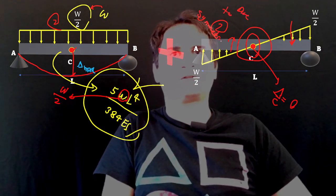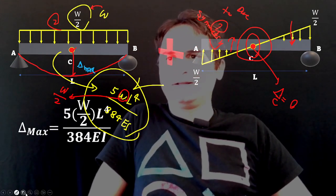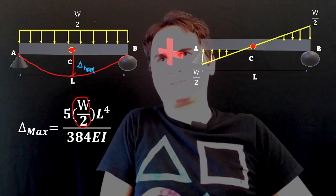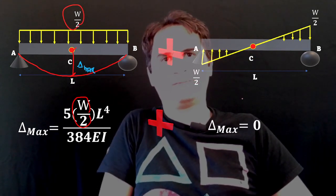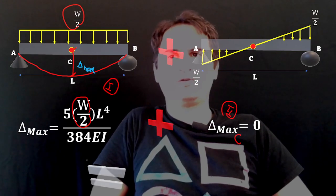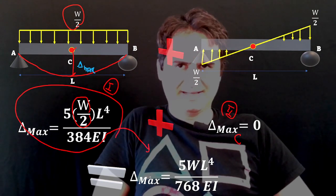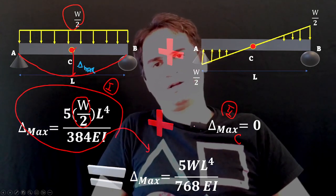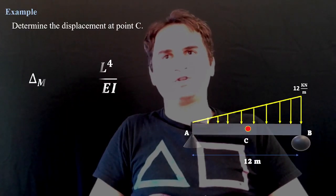Delta max is 5WL^4/(384EI) for the first beam, plus delta at C for the second figure, which is zero. Adding them together, the final result is: delta max at center equals 5WL^4/(768EI), where E is the elastic modulus and I is the moment of inertia of the section.